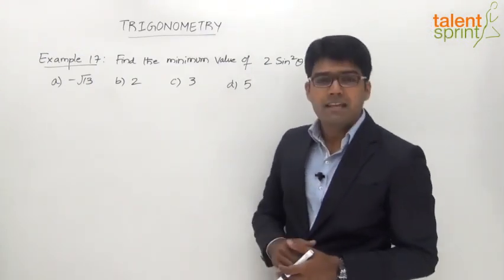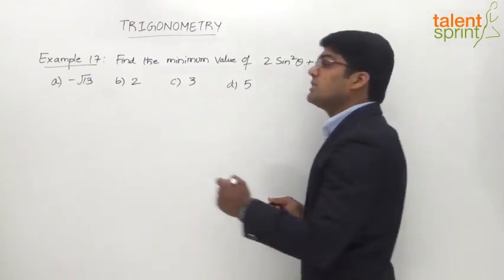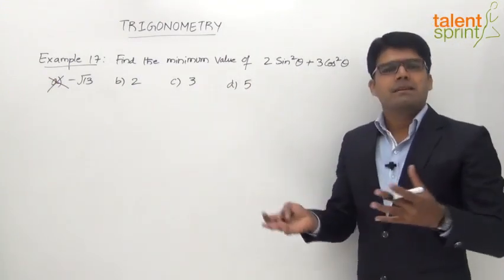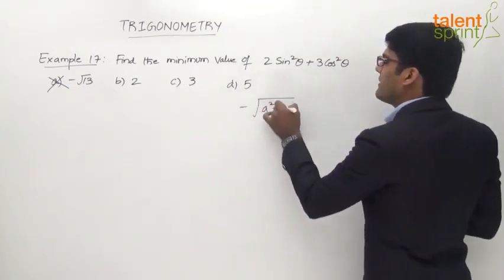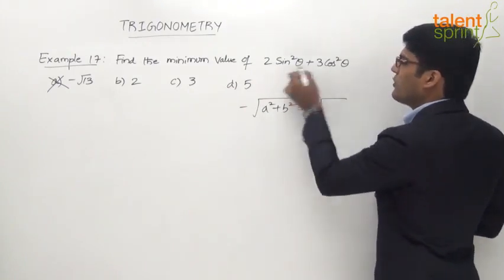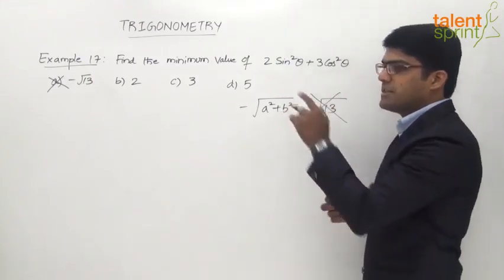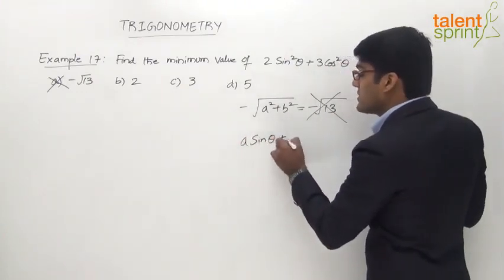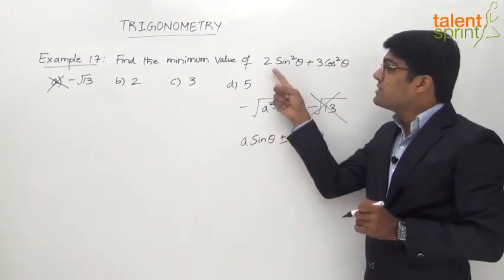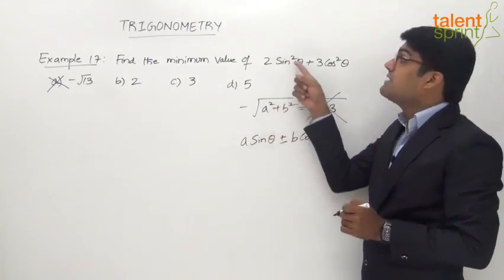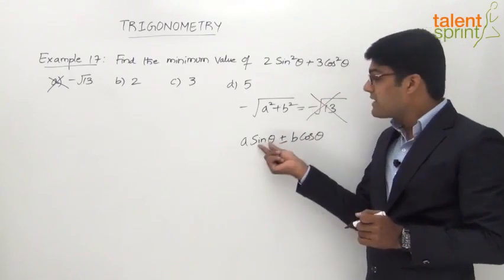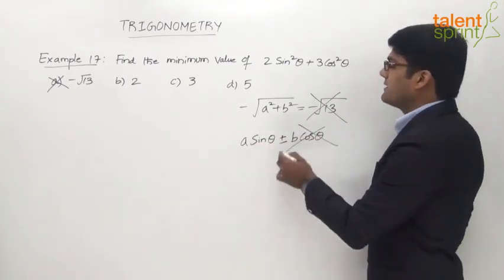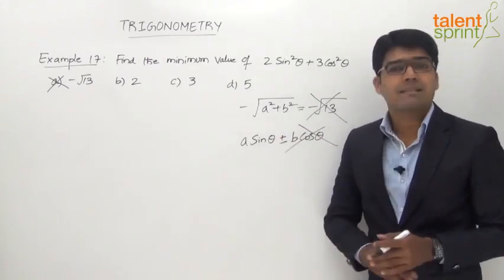If you are thinking that the answer is option A, −√13, let me make it clear that −√13 is not the correct answer. Some may think this is of the form a·sinθ + b·cosθ and the minimum value should be −√(a² + b²) where a = 2 and b = 3, giving −√(4 + 9) = −√13. But this is not correct because the given equation is not of the standard form. The given equation has sin²θ and cos²θ — the trigonometric ratios are squared — so we cannot apply the formula −√(a² + b²).